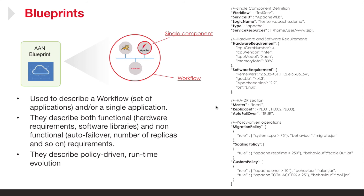An important piece of the whole system is the blueprints and the policies. The blueprints capture the application functional as well as the non-functional requirements. Here you can see a set of components that comprise an application workflow, and then there's a blueprint that describes a single component and a blueprint composed around all those single components to establish a blueprint for the overall application workflow.